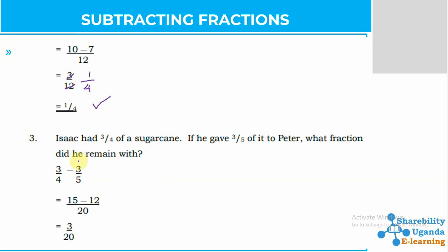Then our question 3, they are saying we had this guy called Isaac. And Isaac had 3 fourths of a sugarcane. So they are saying if he gave 3 out of 5 of it to Peter, he had a friend and he gave it to him, which is very good to share. Then they are telling us what fraction he remained with. So this question also just requires you to subtract. If he had 3 out of 4, then he gave out 3 out of 5.